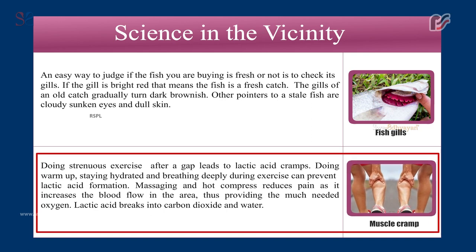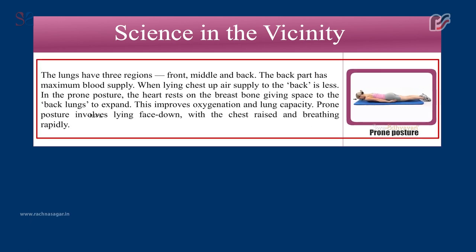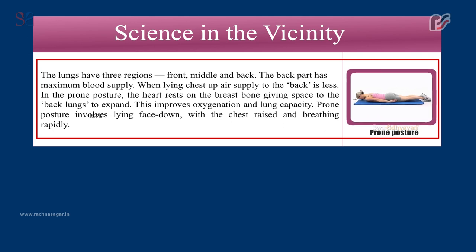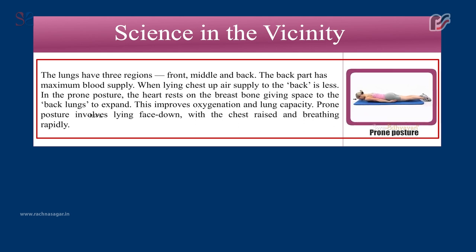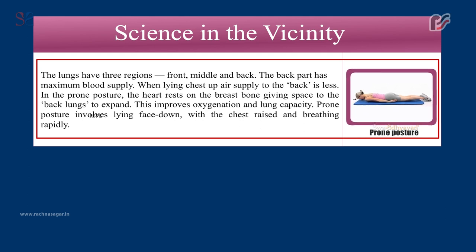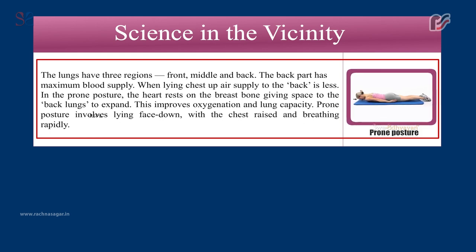Lactic acid breaks down into carbon dioxide and water. The lungs have three regions — front, middle, and back — and the back part has maximum blood supply. When lying chest up, air supply to the back is less. In the prone posture, the heart rests on the breast bone, giving space to the back lungs to expand. This improves oxygenation and lung capacity. Prone posture involves lying face down with the chest raised and breathing rapidly.